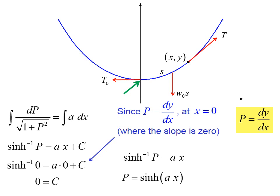Taking the hyperbolic sine of both sides, we get p equals sinh ax. But p is dy dx, so now we have dy dx equals sinh ax. We're almost there.